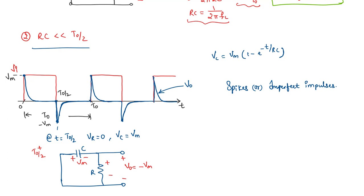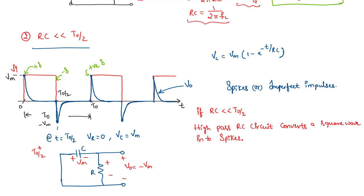Practically, we cannot have a perfect impulse generated. If RC is very, very small compared to the pulse width T0 by 2, this circuit works like a differentiator. When we differentiate a square wave, where the slope is positive we get a positive impulse, and where the slope is negative we get a negative impulse, and so on. Hence, when RC is very, very small compared to T0 by 2, the high pass RC circuit converts a square wave into spikes or impulses, and the circuit behaves as a differentiator.